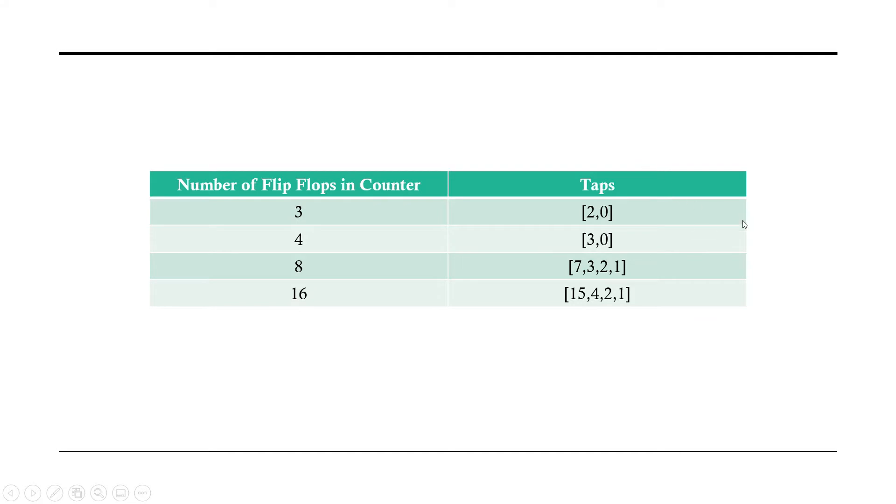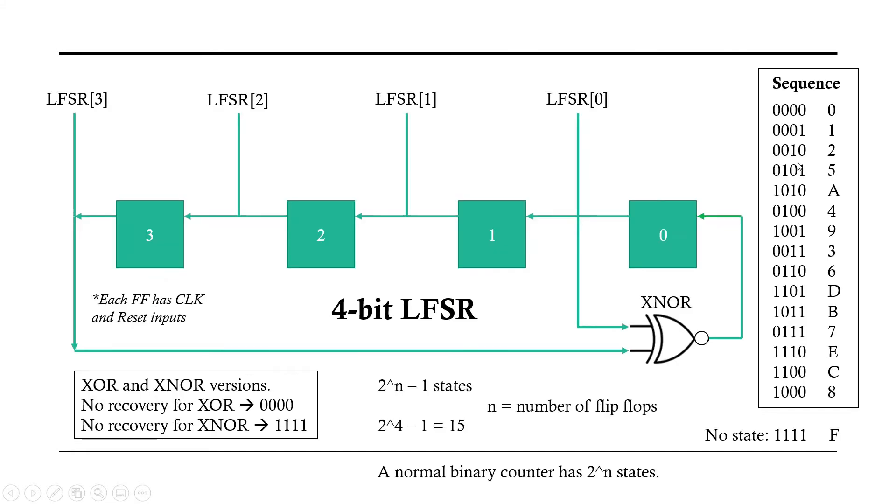So how you figure out the taps, I found a chart in a book. Here's just some common counters. So if you have a three-bit flip-flop, you need to tap 2 and 0. For a four-bit, which is what I'm going to do, it's tapping 3 and 0. Eight-bit, these are your taps, and 16-bit, these are your taps.